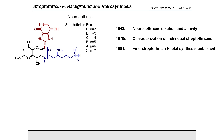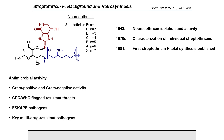In 1981 the first Streptothricin F total synthesis was published. Our primary interest in Streptothricin F and the streptothricin backbone is in the antimicrobial activity of this class of molecules. The streptothricins have gram-positive and gram-negative activity, they are active against CDC and WHO flagged resistant threats, active against members of the ESKAPE pathogens, as well as many key multi-drug resistant pathogens. Of note, Streptothricin F is the least toxic of the entire streptothricin class.